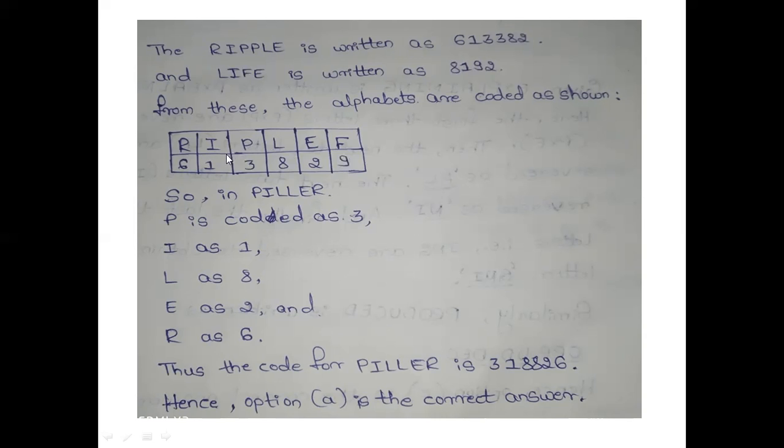So, if you code this, you will be ready for the pillar. P is coded as 3. Because here, P is coded as 3. And I is coded as 1. Because the pillar is spelled P-I-L-L-E-R. So, P is coded as 3 and I is coded as 1.